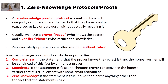The second property is soundness: if the statement is false, no cheating prover can convince the honest verifier that it is true, except with some very small probability. And finally, the zero-knowledge property: if the statement is true, no verifier learns anything other than the fact that the statement is true. He or she will not learn what the secret is.